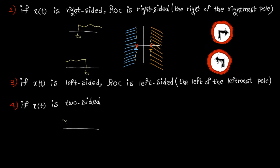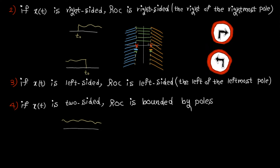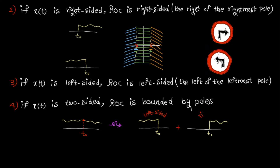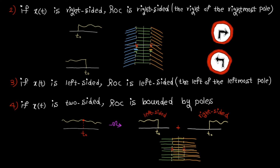Rule number four: if x(t) is two-sided — meaning the signal runs from minus infinity to plus infinity — the ROC is bounded by poles. A two-sided signal can be split at any arbitrary point t-naught into a left-sided part and a right-sided part. The left-sided part gives a left-sided ROC, and the right-sided part gives a right-sided ROC. The final ROC is the common area between these, which lies between the poles.